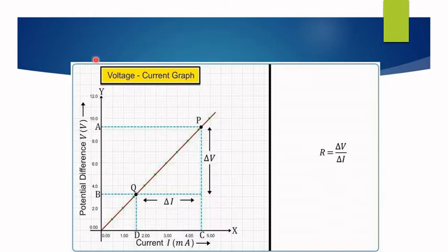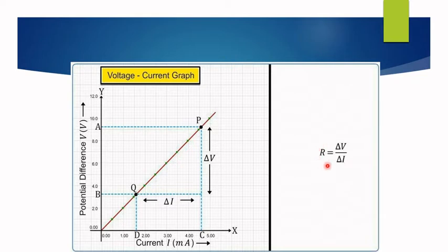This is the graph between potential difference on the y-axis and current on the x-axis. After you complete your plot, calculate the slope. The slope in this case represents the resistance, equal to delta V over delta I, and you can compare the resistance values from the graph and from the mathematical calculation.